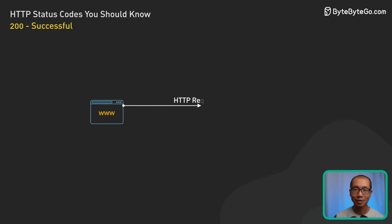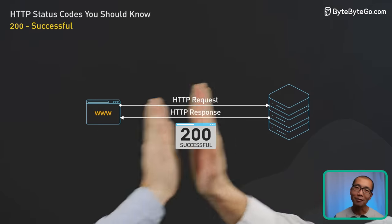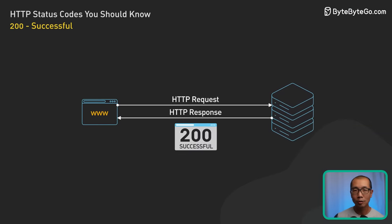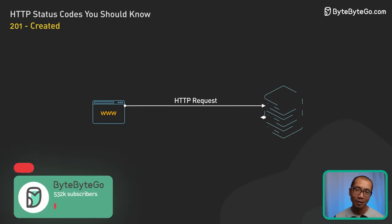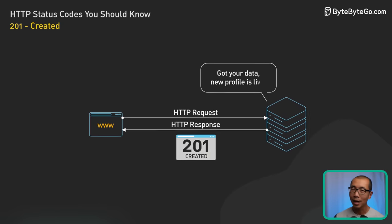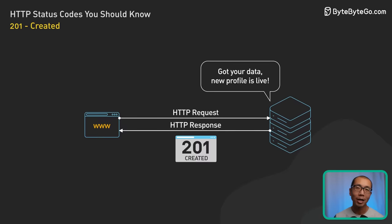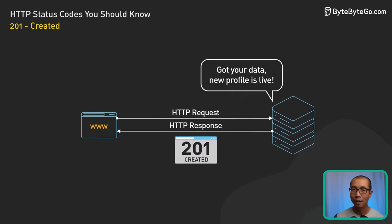Let's start with the good ones, the 200s. These are basically the server giving you a high five. 200 OK means everything went well on the server side. 201 Created is another thumbs up for when something new was created — say you've got an API that adds user profiles, 201 Created means got your data, new profile is live.